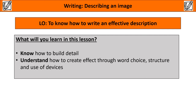Hello, this is Mrs Moss and today's lesson is going to look at writing — in particular, writing to describe an image. The lesson objective is to know how to write an effective description. If you need to pause the screen now to go and get a pen and some paper — in this lesson we're going to look at how we build detailed descriptions and how we create effect through our word choices, our structure, and our use of devices.